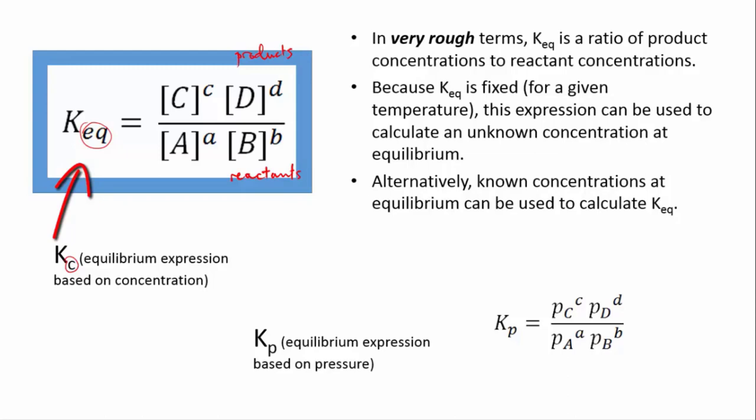But if you're dealing with a reaction involving gases, it's also possible to write the expression in terms of the pressures of the gases like this. So p means pressure, the subscript c means the pressure of gas c. And then just as in the other form of the expression, we raise that number to the power of the stoichiometric coefficient. However, we will usually be using Kc in this course rather than Kp.